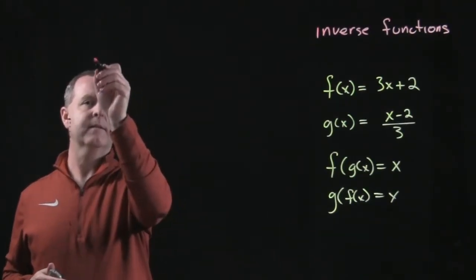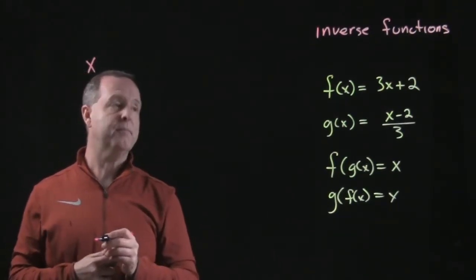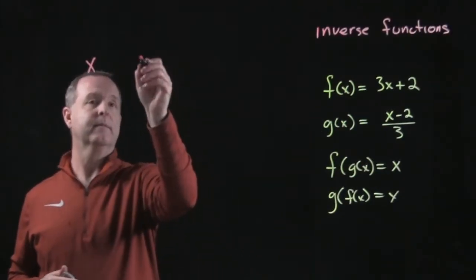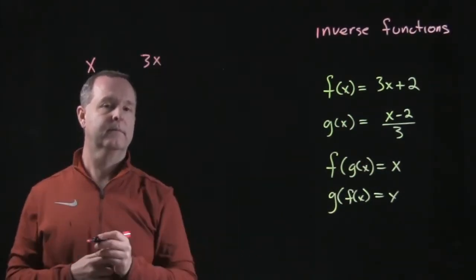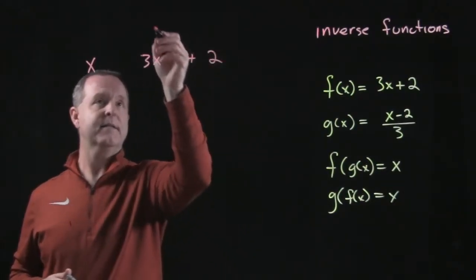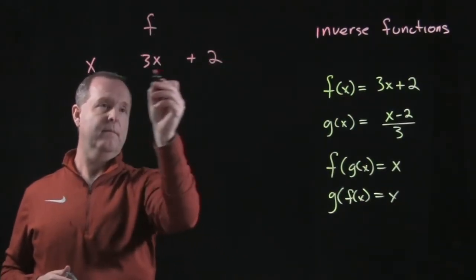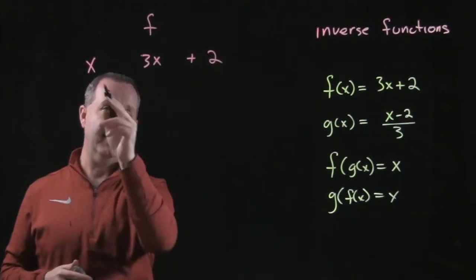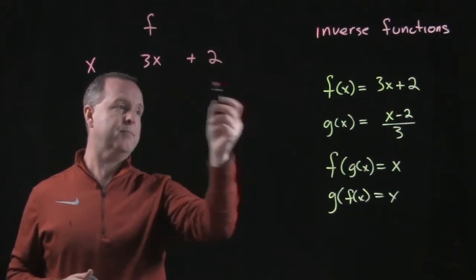We're starting with an x. We're multiplying it by 3, and then we're adding 2. And this is the function. Moving in that direction takes an x and turns it to 3x plus 2.